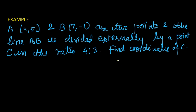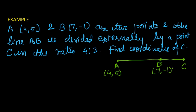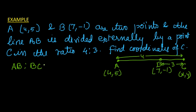Drawing a figure gives us a better understanding. This is line AB; coordinates of A are (4, 5), coordinates of B are (7, -1). It is divided externally by point C with coordinates (x, y). The distance of point A from C to distance of point B from C is in ratio 4:3, so AC:BC = 4:3, meaning AC/BC = 4/3.